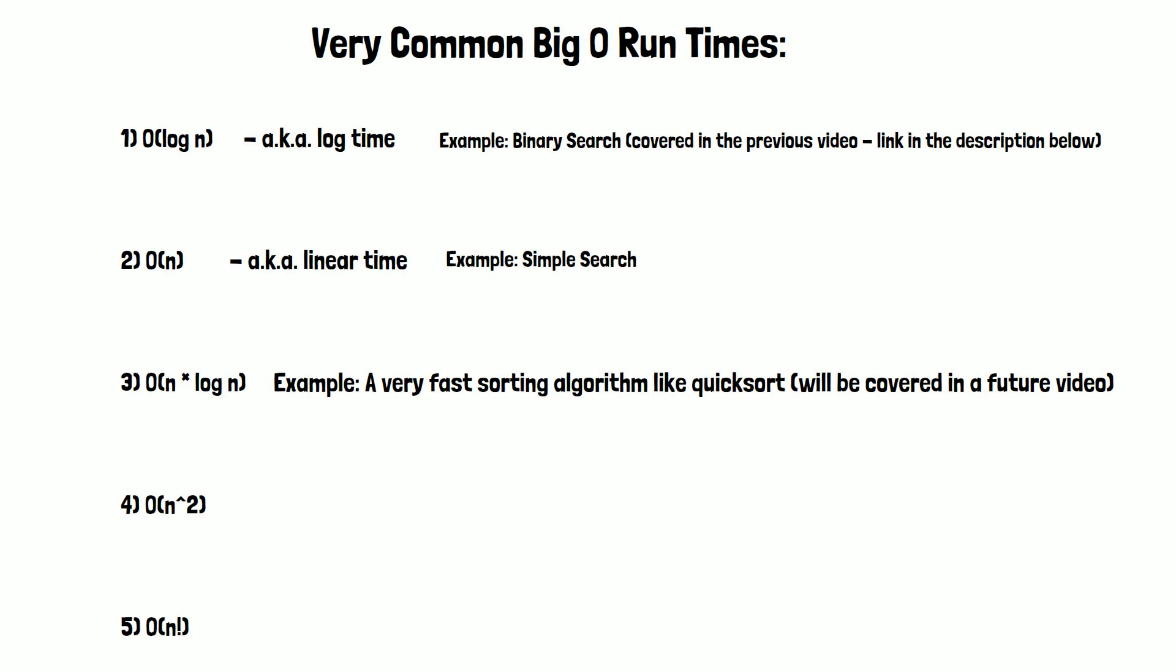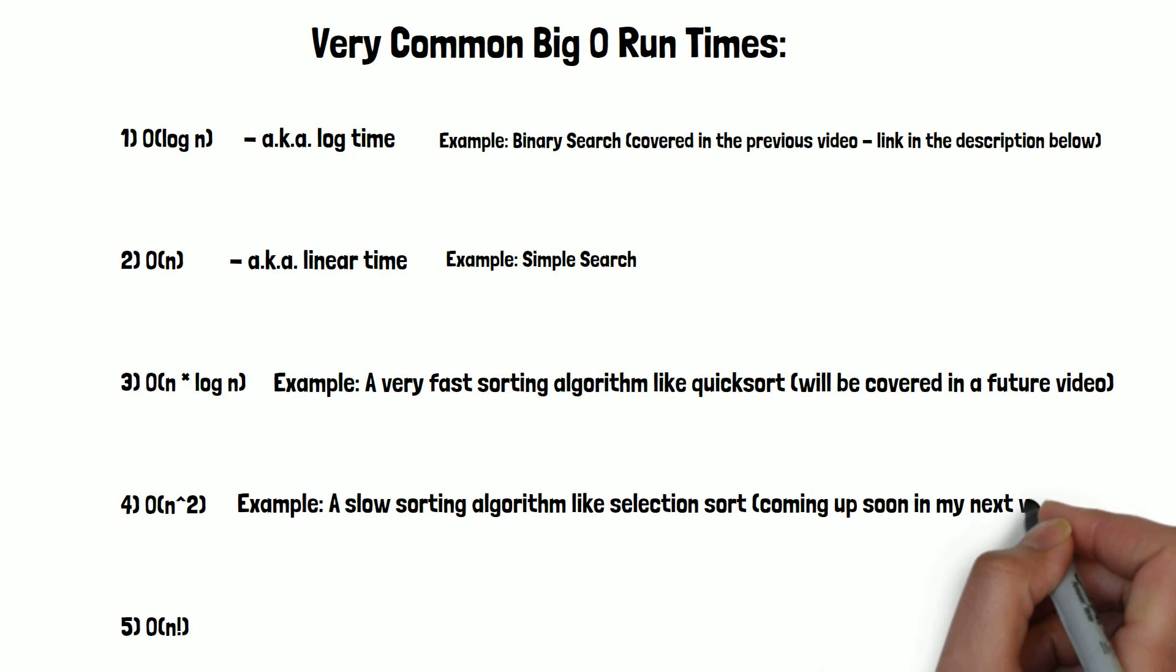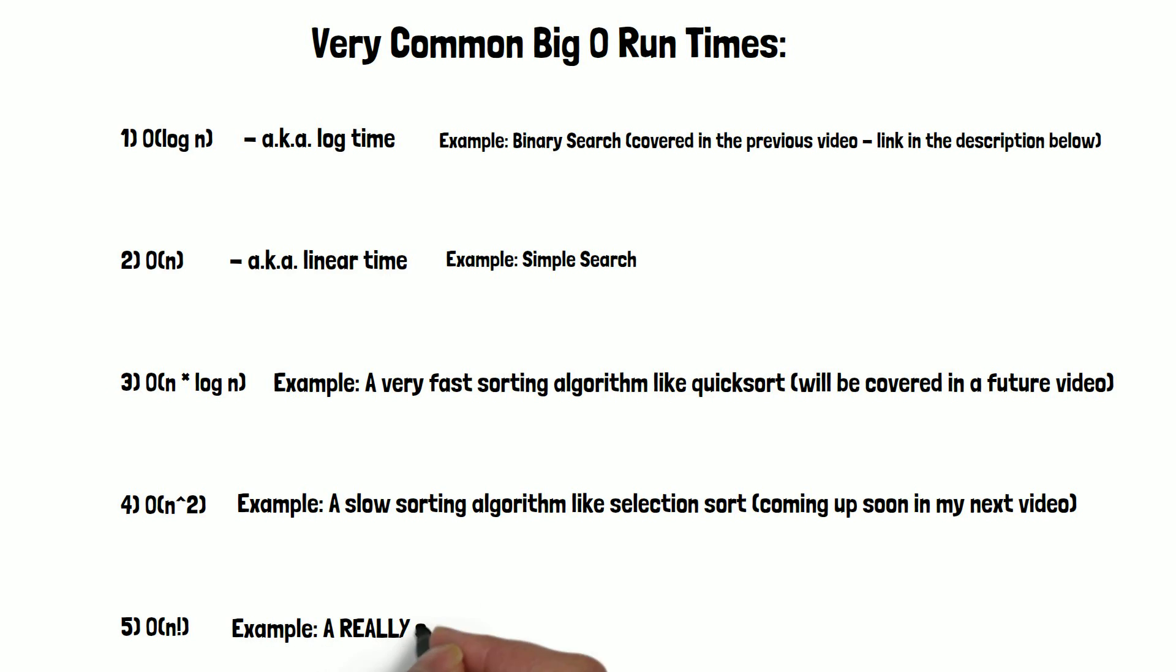Fourth is O(n squared). An example of this is a slow sorting algorithm, like selection sort, which will be coming up soon. Lastly, we have O(n factorial), which is a really slow algorithm. A good example of this is the traveling salesperson algorithm.